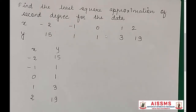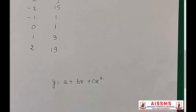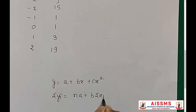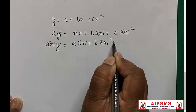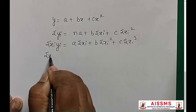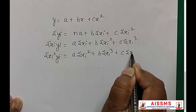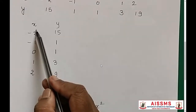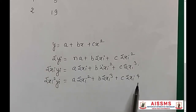Now, to fit a polynomial of second degree, you have to solve three normal equations and your equation of the line comes out to be y is equal to a plus bx plus cx square. You have to solve: summation of yi = na + b·summation(xi) + c·summation(xi²). Then summation of xi·yi = a·summation(xi) + b·xi² + c·xi³. Next, xi²·yi = a·summation(xi²) + b·xi³ + c·xi⁴.